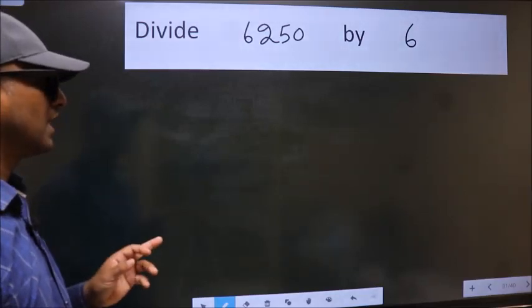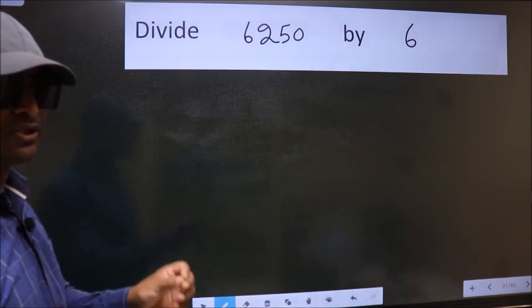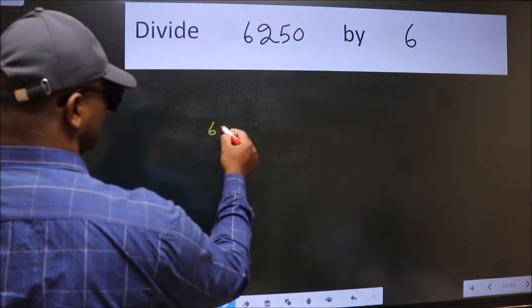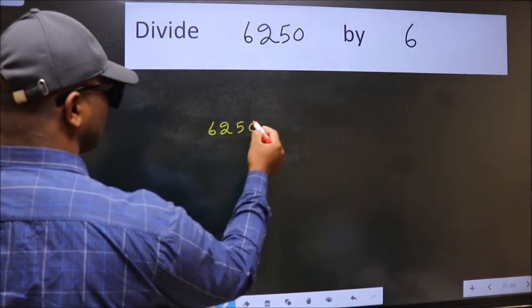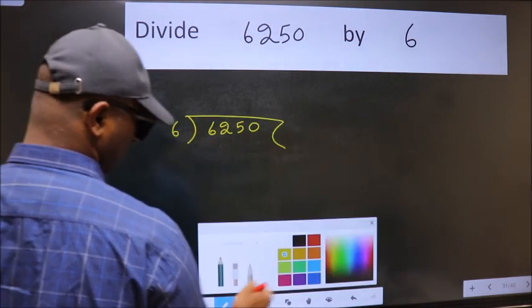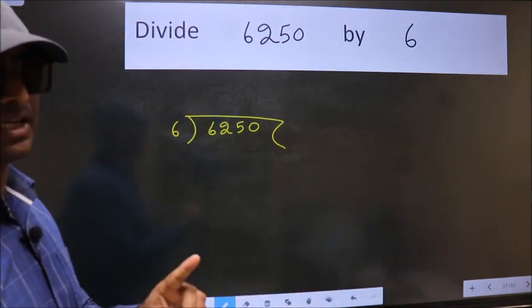Divide 6250 by 6. To do this division, we should frame it in this way. 6250 here, 6 here. This is your step 1.